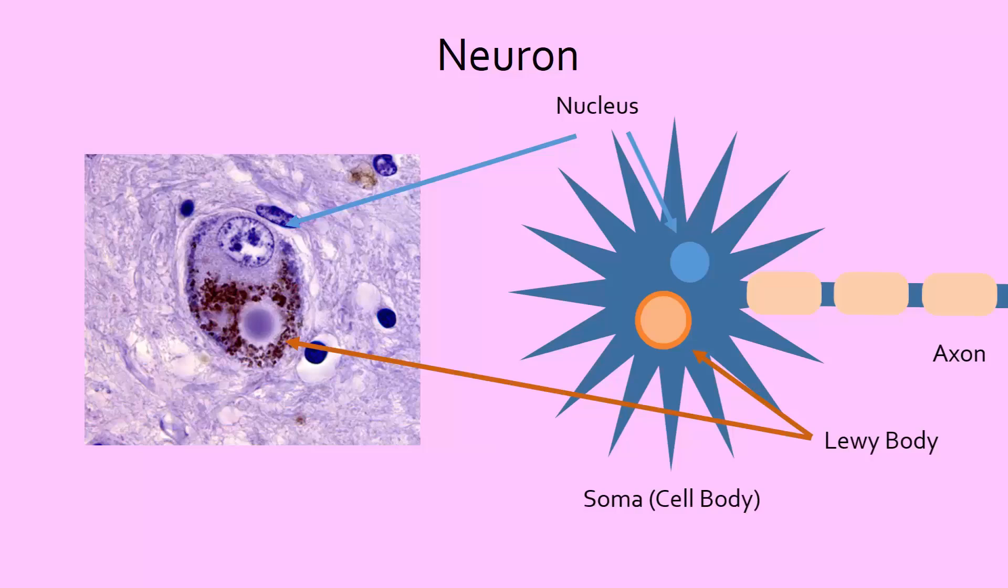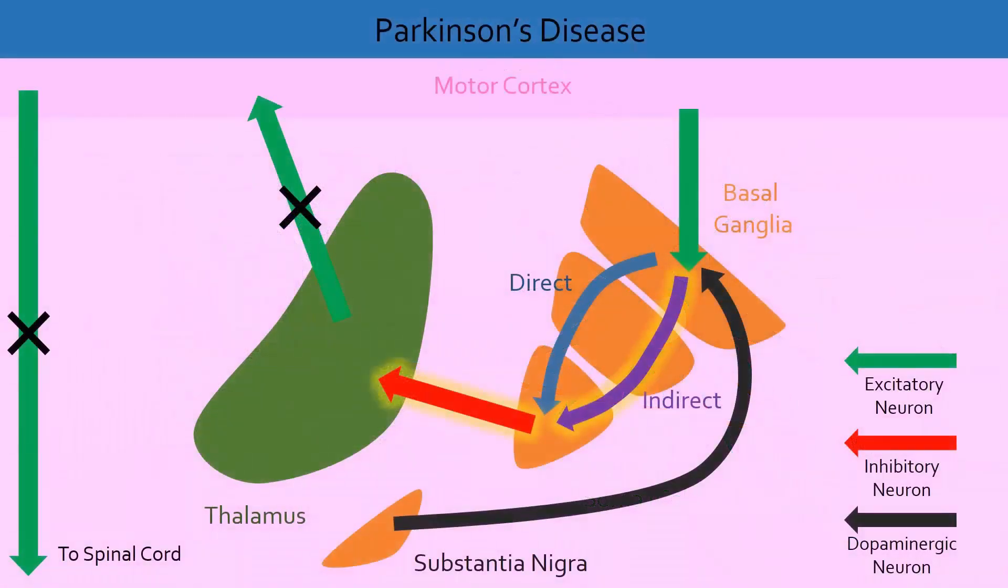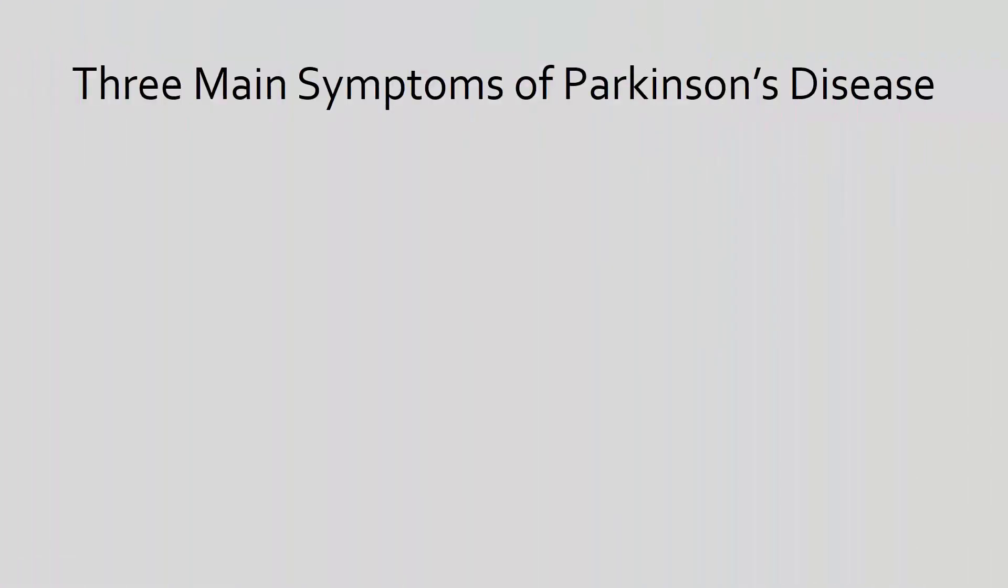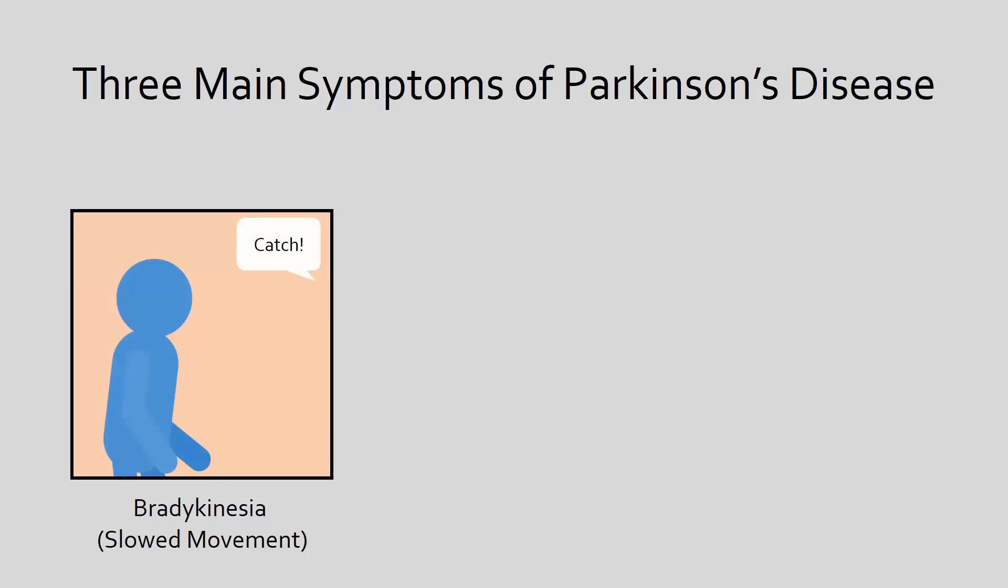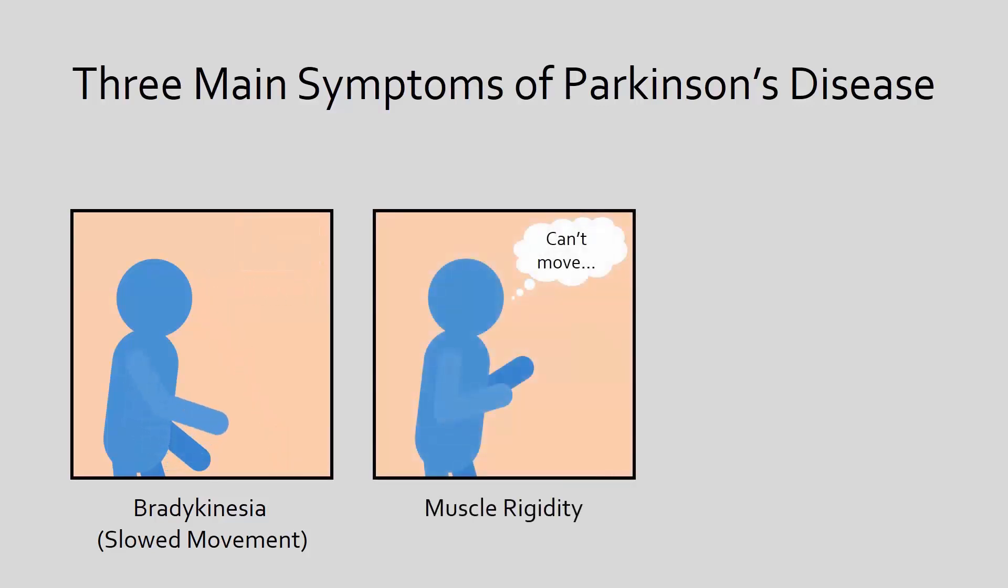One thing is for sure though, without dopamine, initiating movement becomes extremely difficult, leading to two of the three common symptoms of Parkinson's: bradykinesia, or slowed movement, and rigidity. These in turn lead to other motor problems such as speech, writing, and balance difficulties.